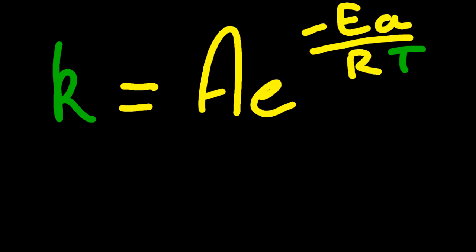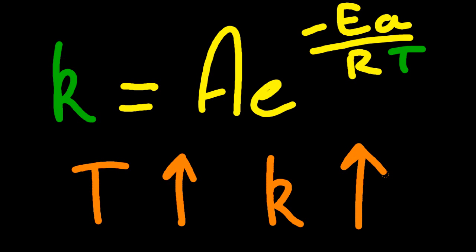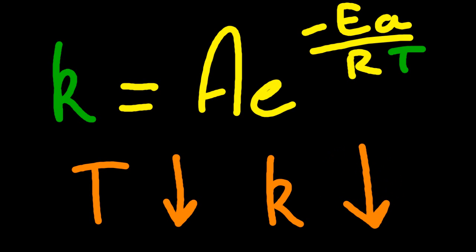So it might not be entirely clear from this equation, but as T increases, K will also increase. And vice versa, as T decreases, K will also decrease. The temperature and the rate constant go hand in hand. So let's explain why.